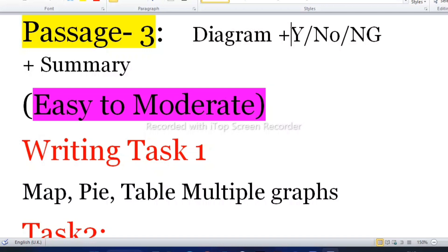In Section 3: diagram, Yes/No/Not Given, summary completion would be there, and the level will be easy to moderate. Your Section 3 will be very easy, so try to solve your Section 3 first and Reading Passage 1 or 2 later.